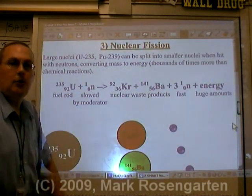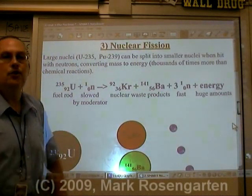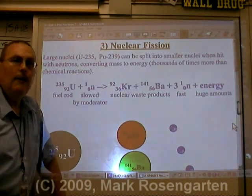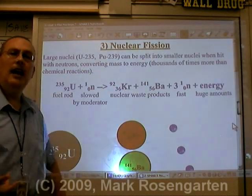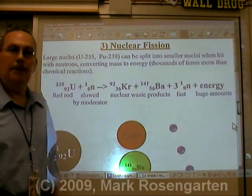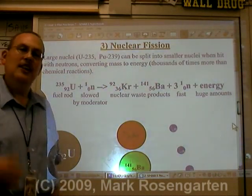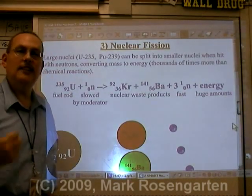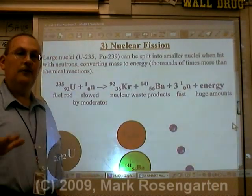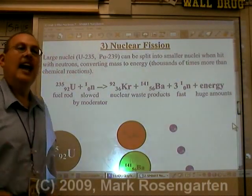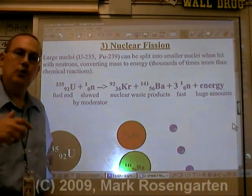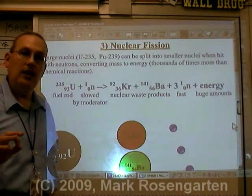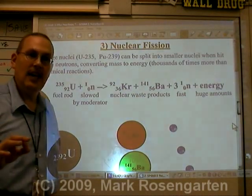Control rods are made of specially treated steel. Why steel? Because iron, the main component of steel, is the most stable nucleus there is — iron-56. And it can absorb neutrons without becoming radioactive itself. So iron-56 is an excellent absorber of neutrons.